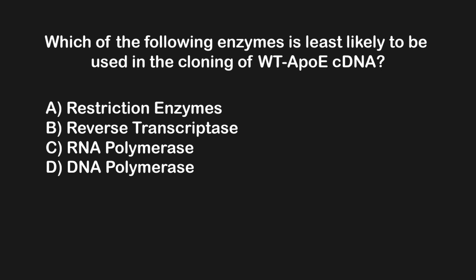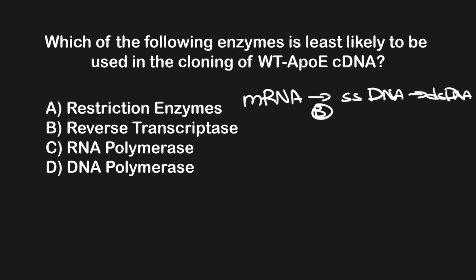With that in mind, let's overview how cDNA is made. First, mRNA is isolated and converted into single-stranded DNA, which is then converted to double-stranded DNA, which is cut and ligated into a plasmid. The mRNA to single-stranded DNA step uses reverse transcriptase, so we can eliminate answer B. The single-stranded DNA to double-stranded DNA step uses DNA polymerase, so we can also eliminate answer choice D.